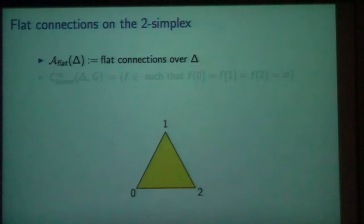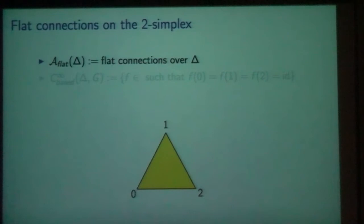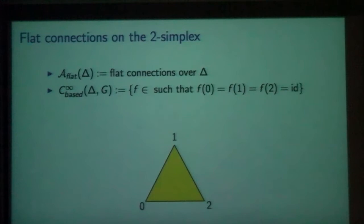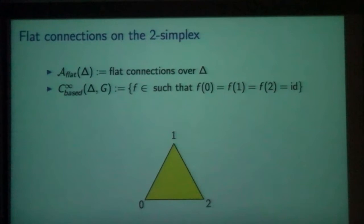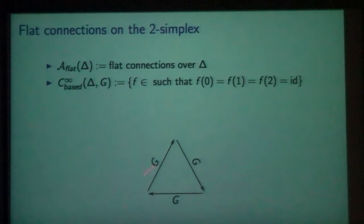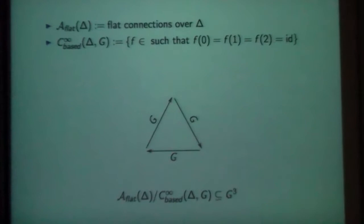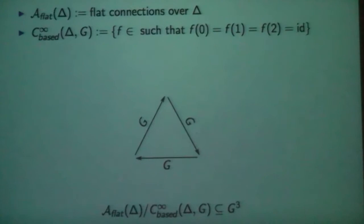Now let's look at flat connections on the triangle. I'm going to not quotient by the full gauge group, but by the base gauge group — the gauge transformations which act trivially at each of the vertices. Since I'm acting trivially at each vertex, I can still take the holonomy along the edges. That gives me an embedding of the quotient of the space of flat connections modulo these base gauge transformations into three copies of the structure group — one copy per edge. The embedding is just the holonomy along those edges.